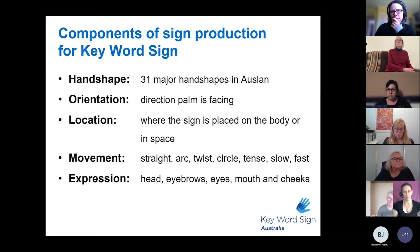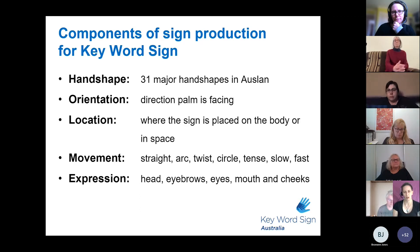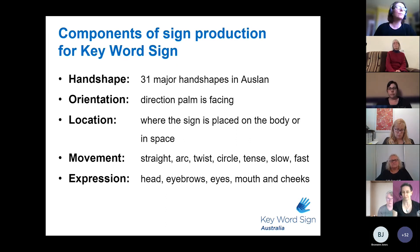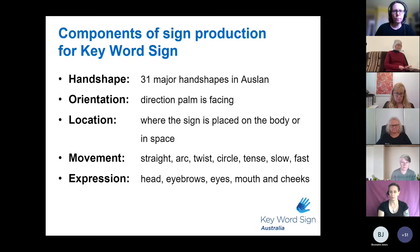For those of you who are not as familiar with the concept of HOME, it's the components of sign production, and we borrow that also from Auslan. This is the same sign production used for signs in the Auslan language as well. H stands for handshape, which is 31 major handshapes in Auslan. However, there are actually 32 variants of those handshapes as well, making up a total of 63 different shapes that we use with our hands to create signs. O is for orientation, which refers to the way that our palm is facing when we're creating a sign. L is location — where the sign is placed on the body or where the sign is occurring in time and space.